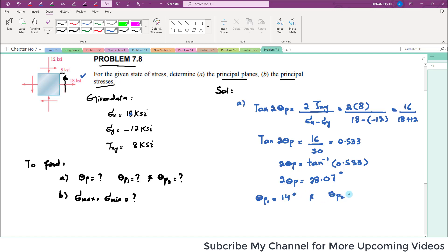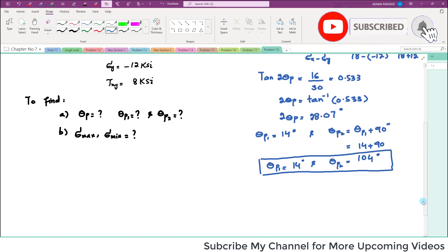So theta_p1 will be equal to 28.07 divided by 2, which is approximately equal to 14 degrees. And theta_p2 can be obtained if you add 90 degrees with theta_p1. So theta_p2 is equal to theta_p1 plus 90 degrees, which equals 104 degrees. These are the principal planes.